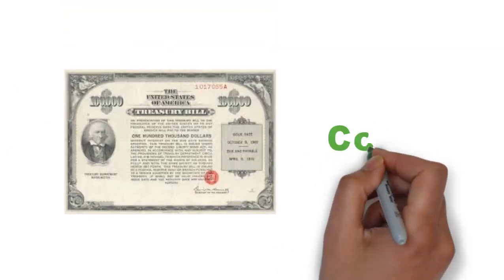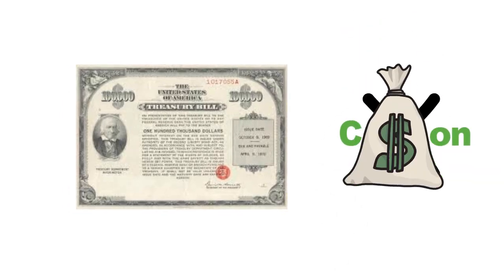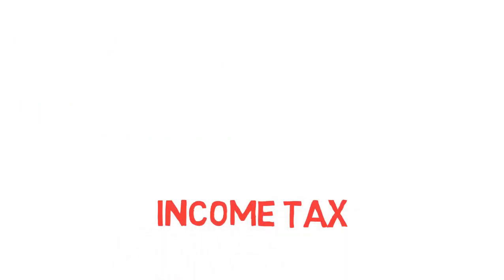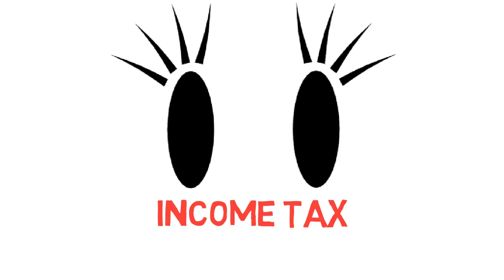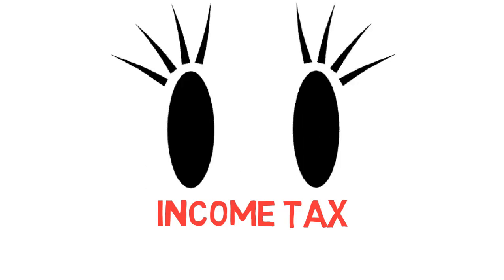A zero-coupon bond is a debt security that does not pay interest or coupon, but is traded at a deep discount, rendering profit at maturity when the bond is redeemed for its full face value. One of the downsides of zero-coupon bonds is that, although no payments are made to the holder until the bond matures, she may have to pay income tax on the assigned interest that accrues each year.